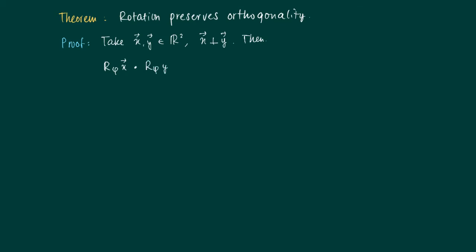We calculate the inner product of the rotated vector x and the rotated vector y. Proving that they are orthogonal means that this inner product should deliver zero. Here is the first component, the rotated vector x written down in coordinates. Similarly, here we can write the vector y rotated over an angle phi.